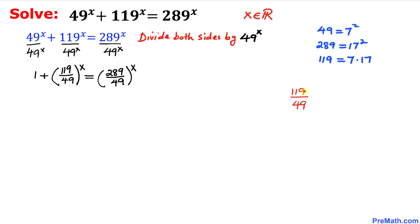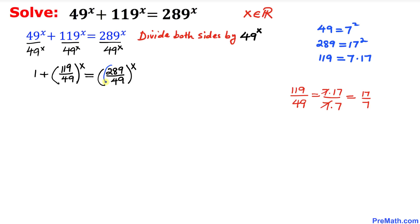Let's simplify 119/49. We can write 119 as 7 times 17, and 49 as 7 times 7. The 7s cancel each other out, so we are reduced to 17 over 7.